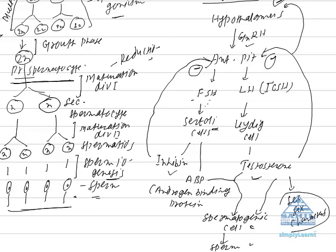The other function of testosterone is development of secondary sex characters. Secondary sex character is a character on the basis of which sex of a person can be distinguished. And such characters in males are low-pitched voice, beard, mustache. For development of such character, testosterone hormone is required.